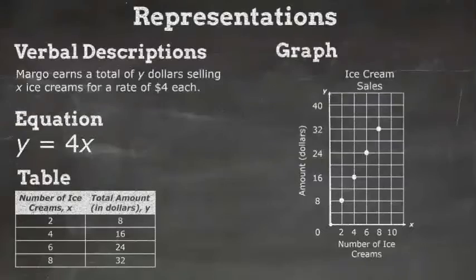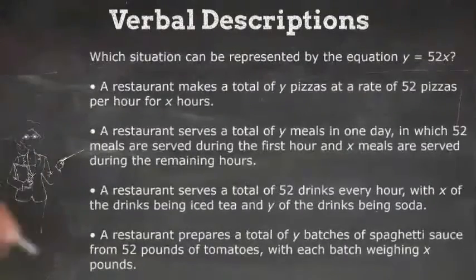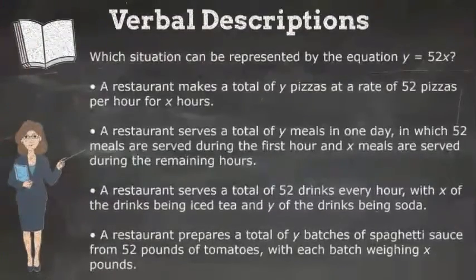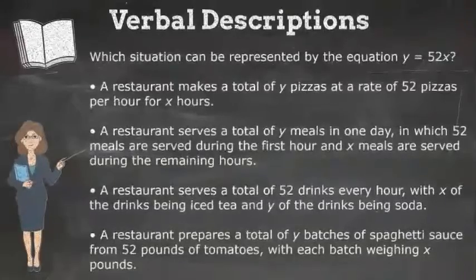Let's investigate each type of representation now. Which situation can be represented by the equation y equals 52x? Before we read the answer choices, let's think about the equation. Our variables are x and y. 52 is the rate, and x is the number of 52's being repeated. So y is the total.